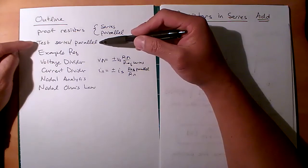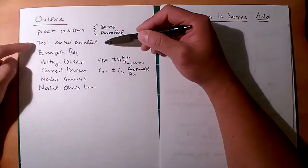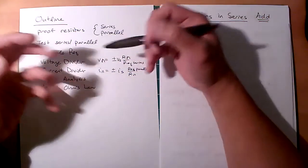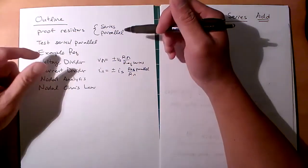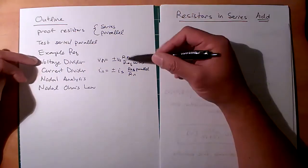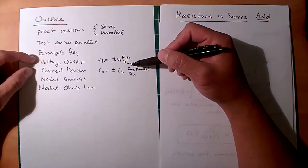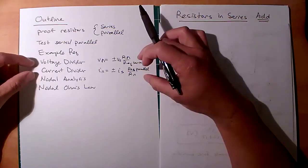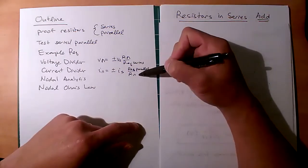We're going to look at a test for how to determine if elements are in series or in parallel — it's a very simple concept. Then we'll look at an example of how to collapse down a resistor network to simplify a bunch of resistors to maybe one. We'll also look at two new tools: the voltage divider and current divider, which are just combinations of KVL, KCL, and Ohm's law to compute a voltage or current for resistors in series or parallel.